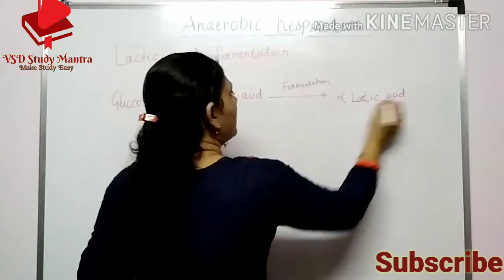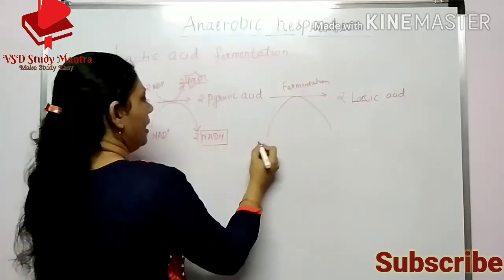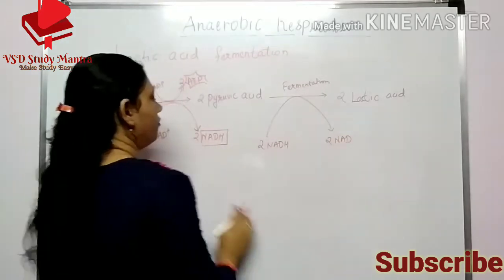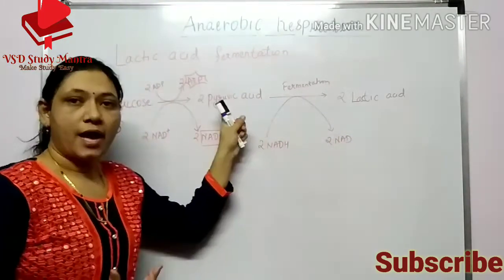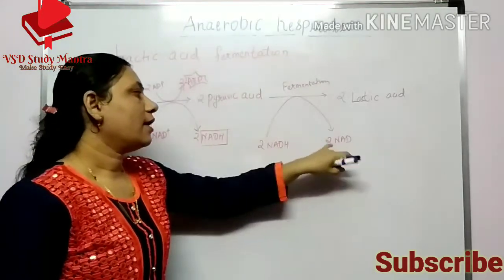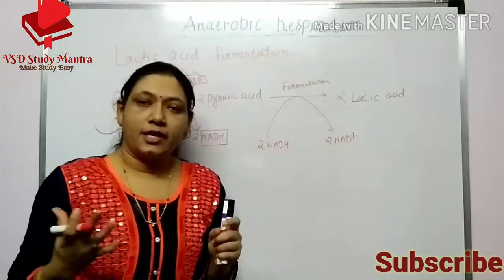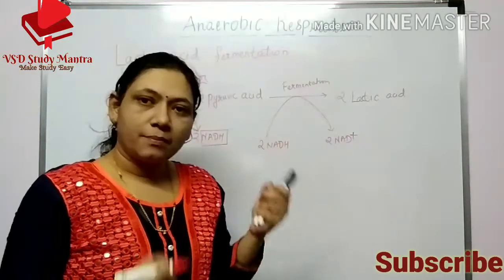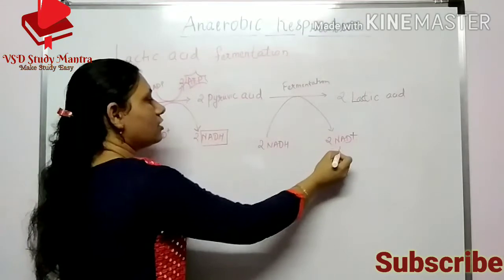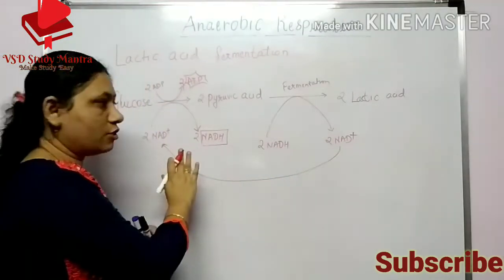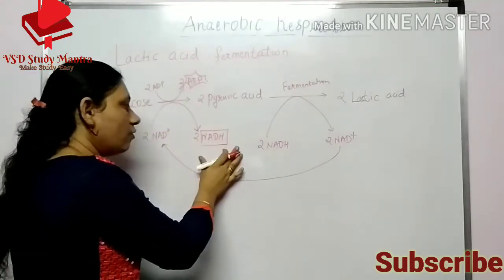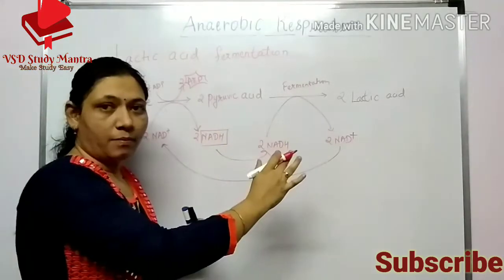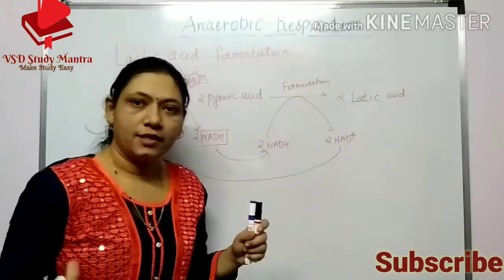Lactic acid is formed by NADH, which directly goes into the pyruvic acid formation. There is no oxygen to accept the electrons in the fermentation process. Therefore, these electrons go back into the process of glycolysis. This NADH forms electrons and shifts them directly here. This is the process of lactic acid formation.